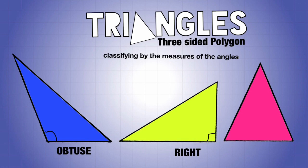Finally, when all angles are less than 90 degrees, you have an acute triangle. So all of these measures in here would be less than 90 degrees, and that's what an acute triangle would be.